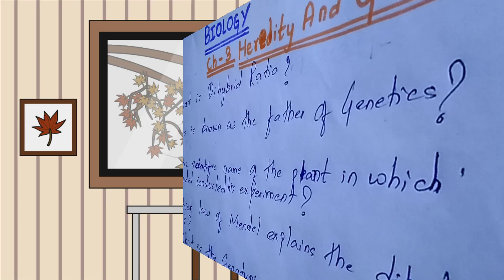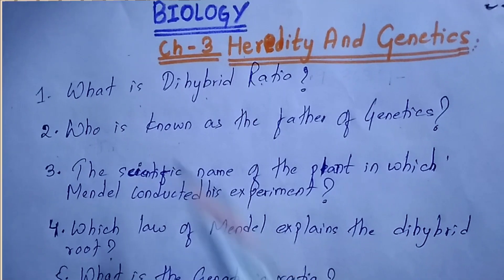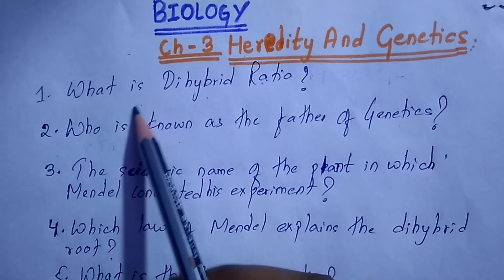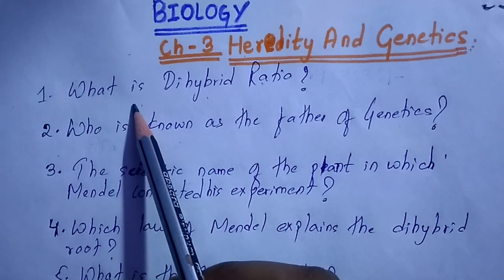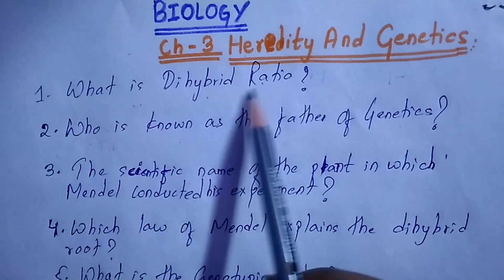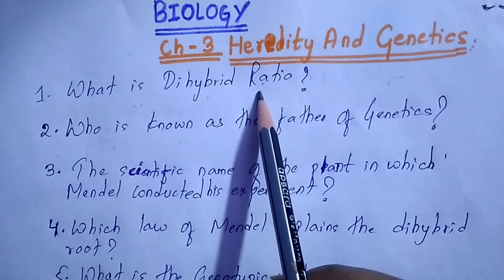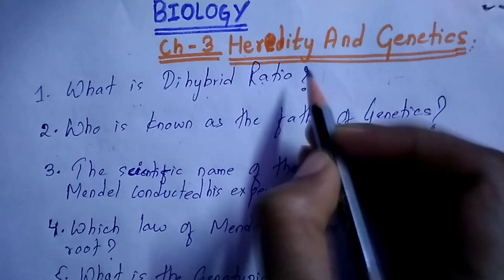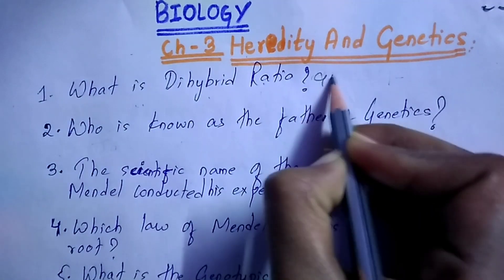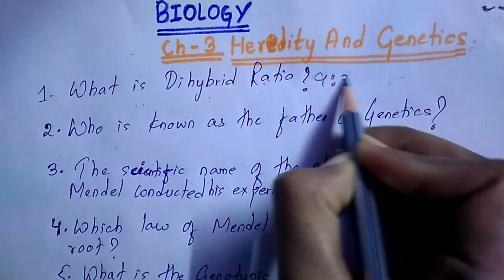Number one: what is the dihybrid ratio? It is 9:3:3:1.